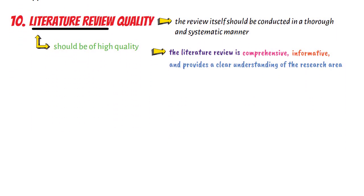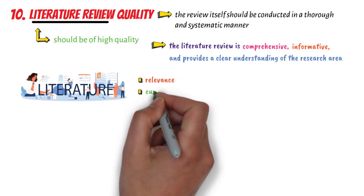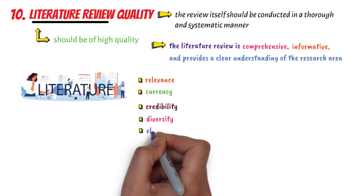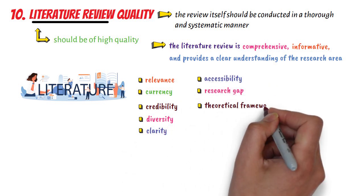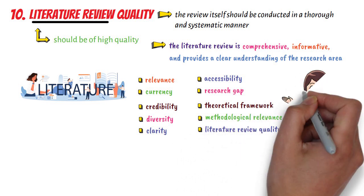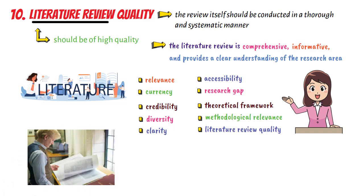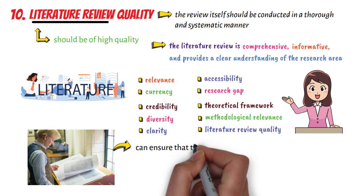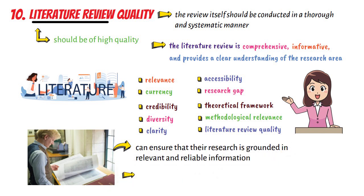In summary, selecting related literature involves considering the relevance, currency, credibility, diversity, clarity, accessibility, research gap, theoretical framework, methodological relevance, and literature review quality. By carefully selecting related literature, researchers can ensure that their research is grounded in relevant and reliable information and that it contributes to the body of knowledge in their research field.